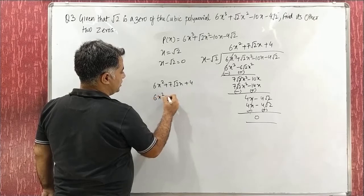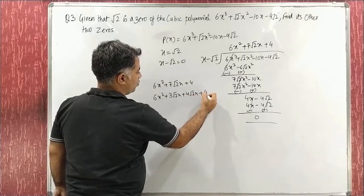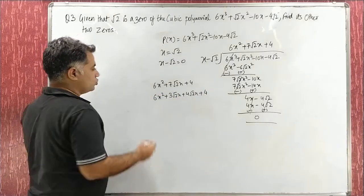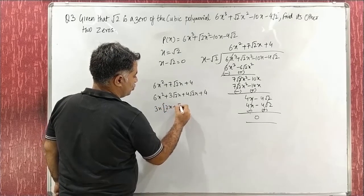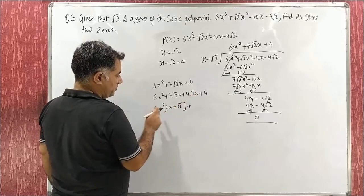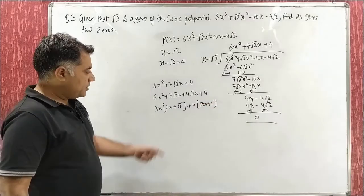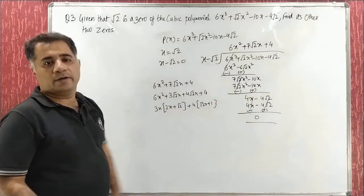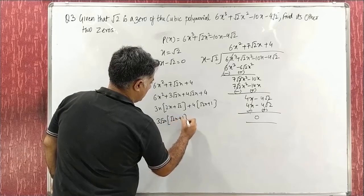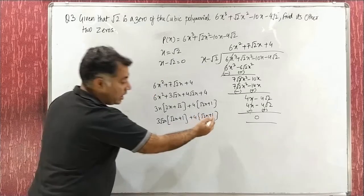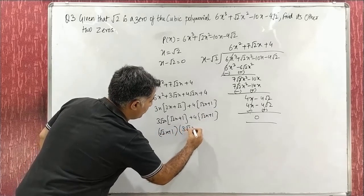Now split the middle term of q(x) = 6x² + 7√2x + 4. This gives 3√2x + 4√2x + 4, because 4 × 3 = 12 and 12 × 2 = 24, which is what we need. Take 3x common: 2x + √2. Take 4 common: √2x + 1. Common factor in both is (√2x + 1). So factors are (√2x + 1)(3√2x + 4). Setting each to zero: x = −1/√2 and x = −4/(3√2).